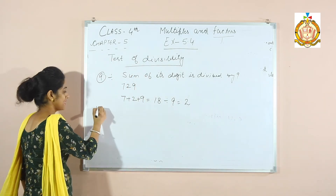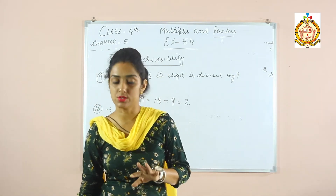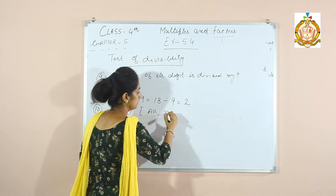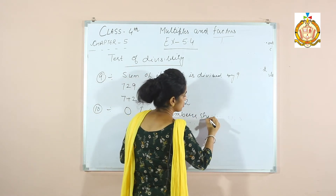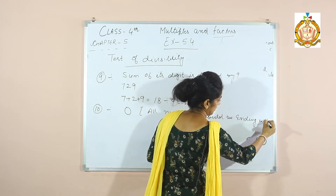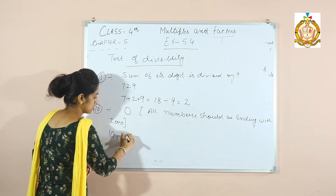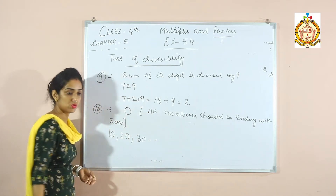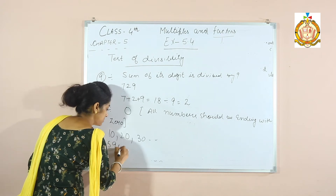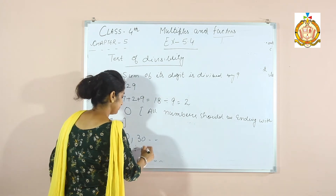Divisibility by 10: the last digit must be 0. All numbers ending with 0 are divisible by 10, like 10, 20, 30, and so on. For example, 5900 — its last digit is 0, so it is divisible by 10.